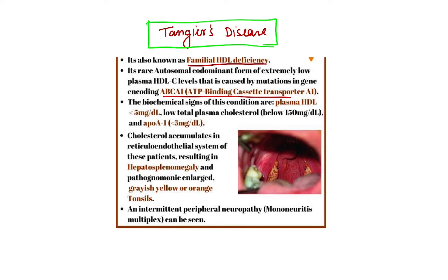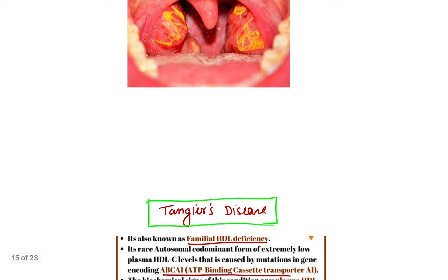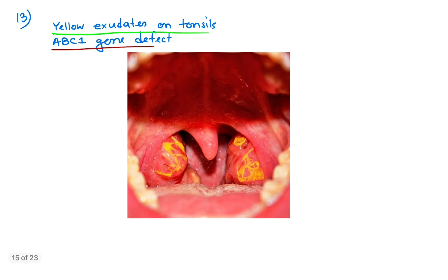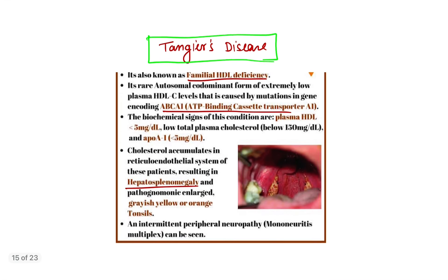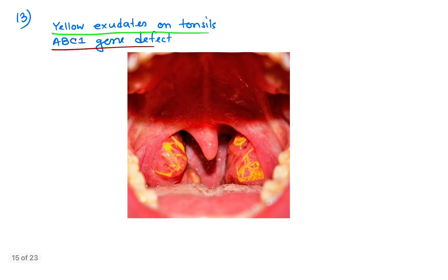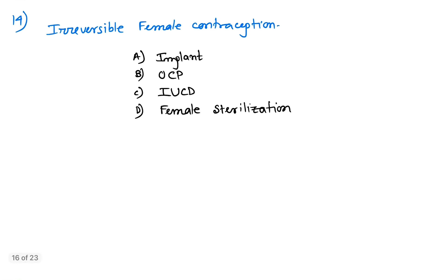It shows yellow exudations over tonsils along with hepatosplenomegaly. This is Tangier disease with ABC1 gene defect. Question number 14: irreversible female contraception. As all of you know, OCP, IUCD, and implants are all reversible.